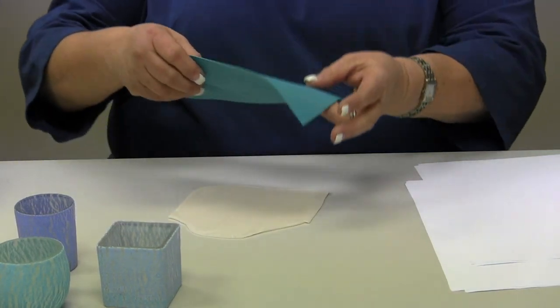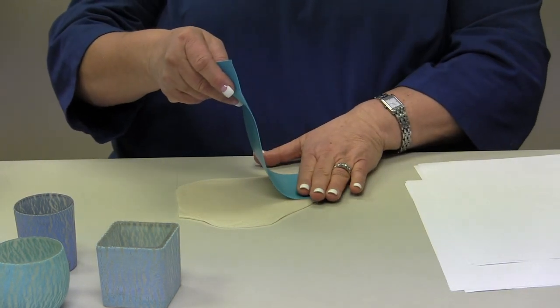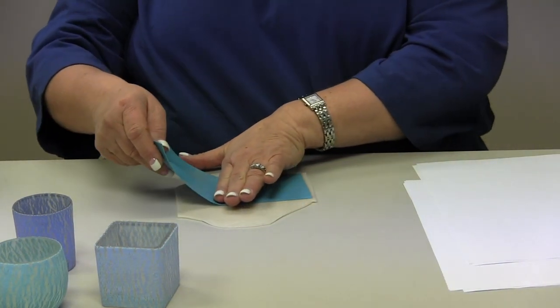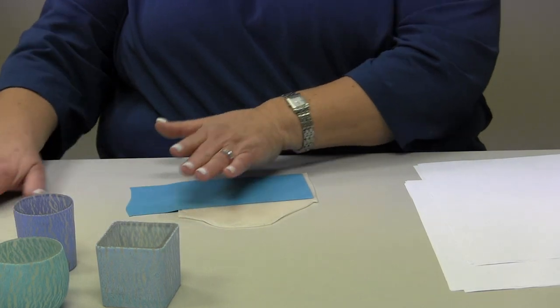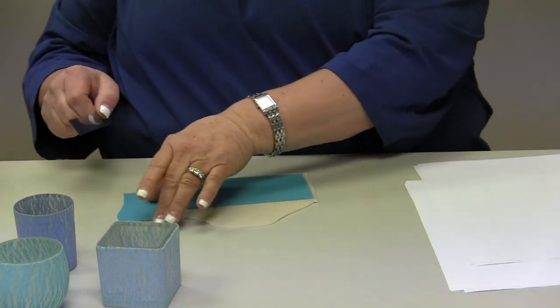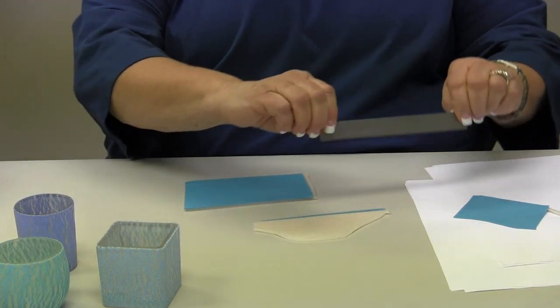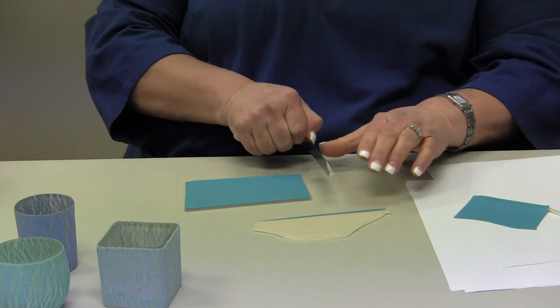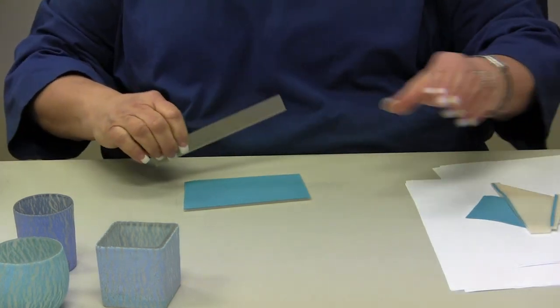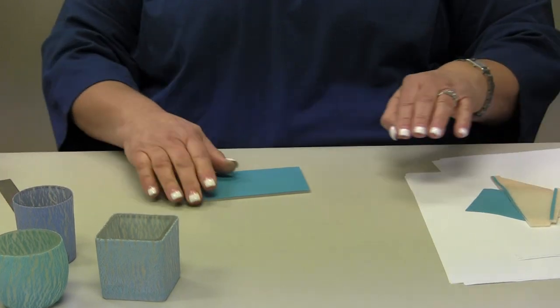And what I do is I take the thin sheet of colored clay and I carefully put it over the sheet of translucent and I trim everybody up, which you don't necessarily have to.